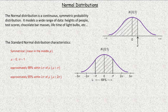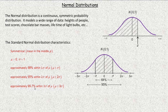95% of the data is within two standard deviations, and 99.7% is within three standard deviations. That means only 0.3% falls beyond three standard deviations below or above the mean. These characteristics apply to any normal distribution, not just the standard normal.